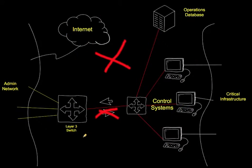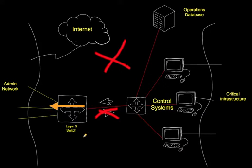All information created on the critical system VLAN is pushed to the appropriate admin or business management systems. The business management systems are not allowed to pull data from those systems. No traffic is allowed to pass from the admin network to the control system network.